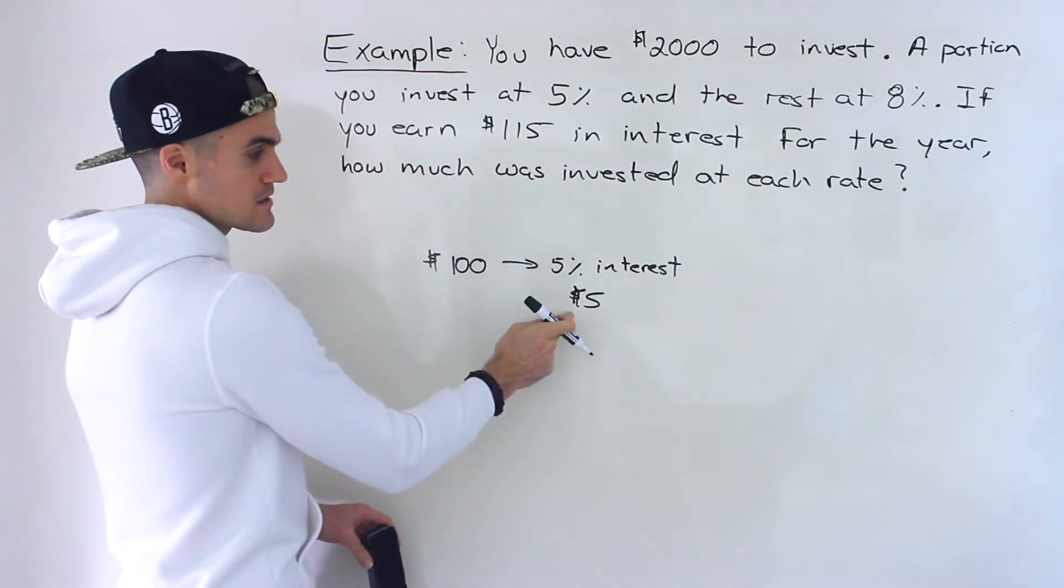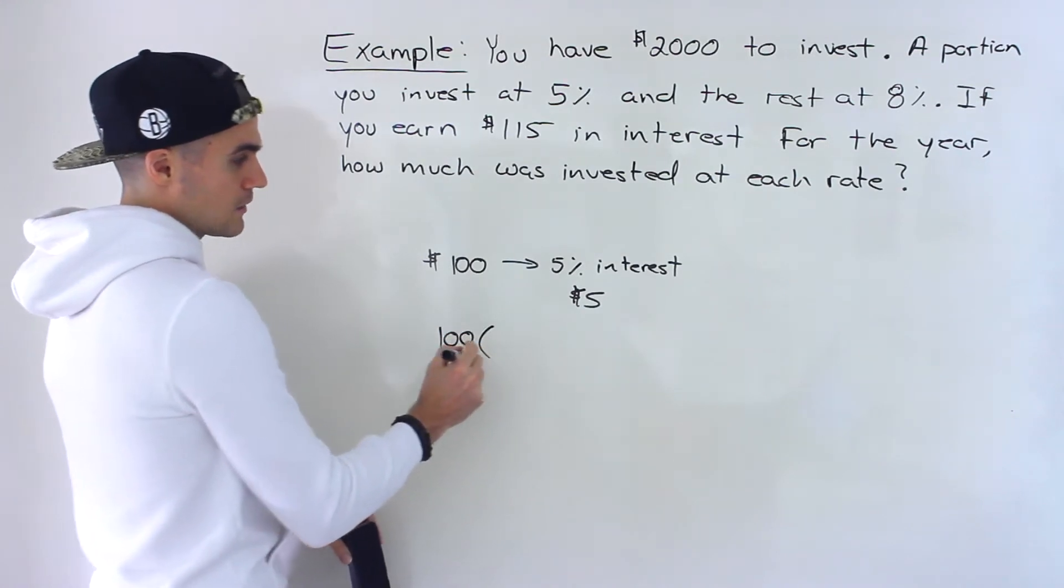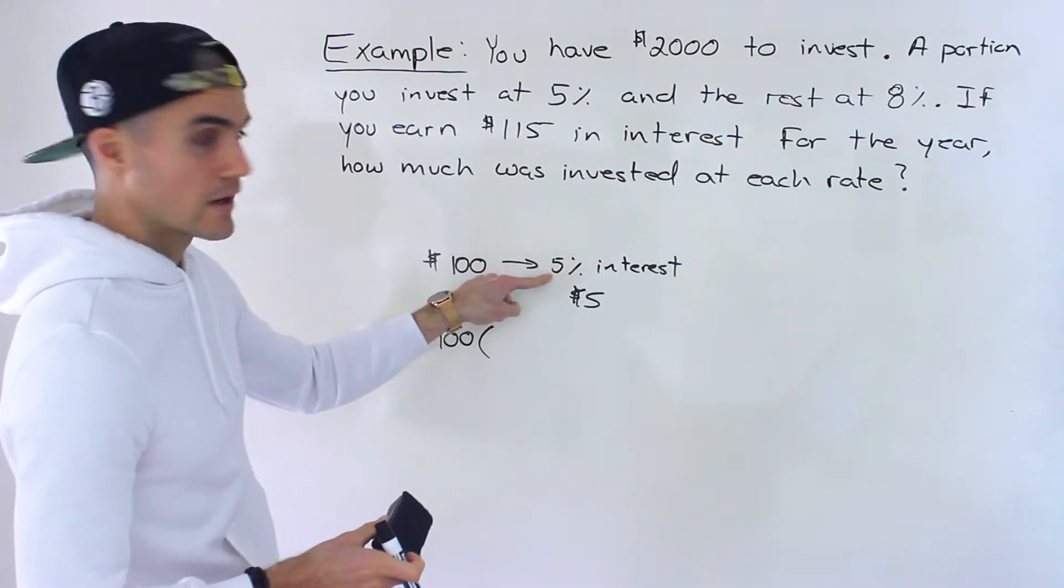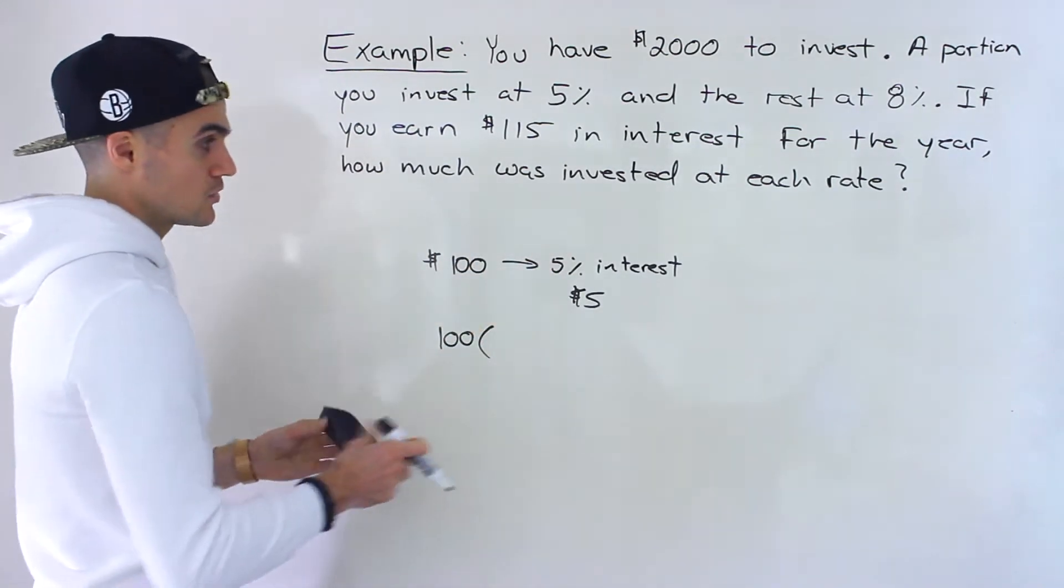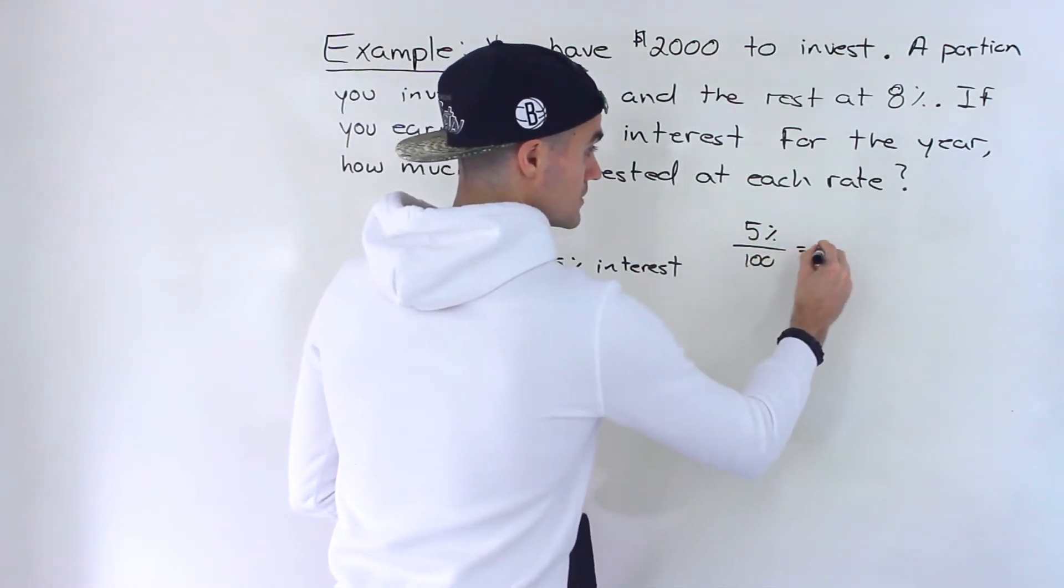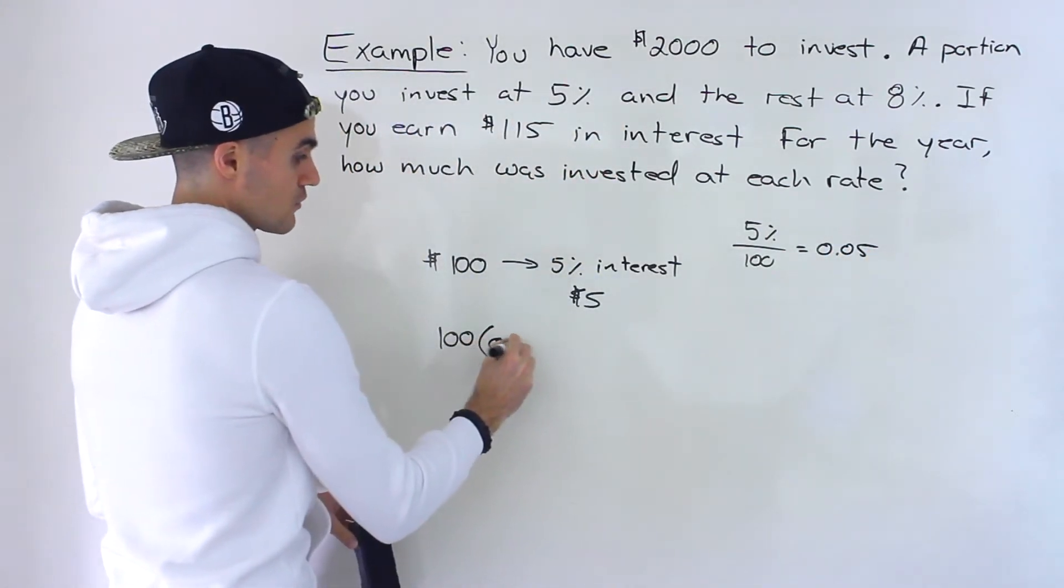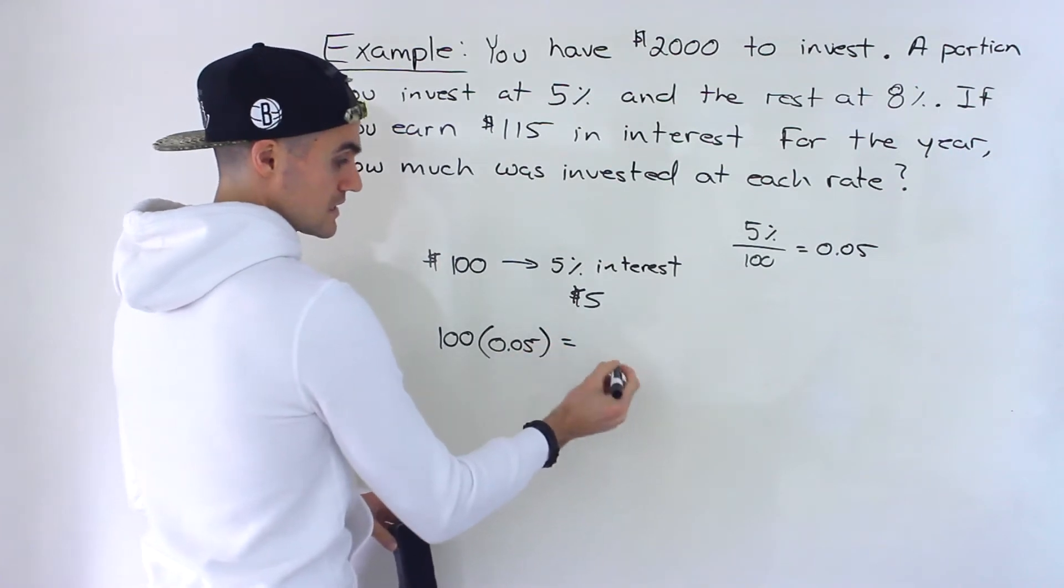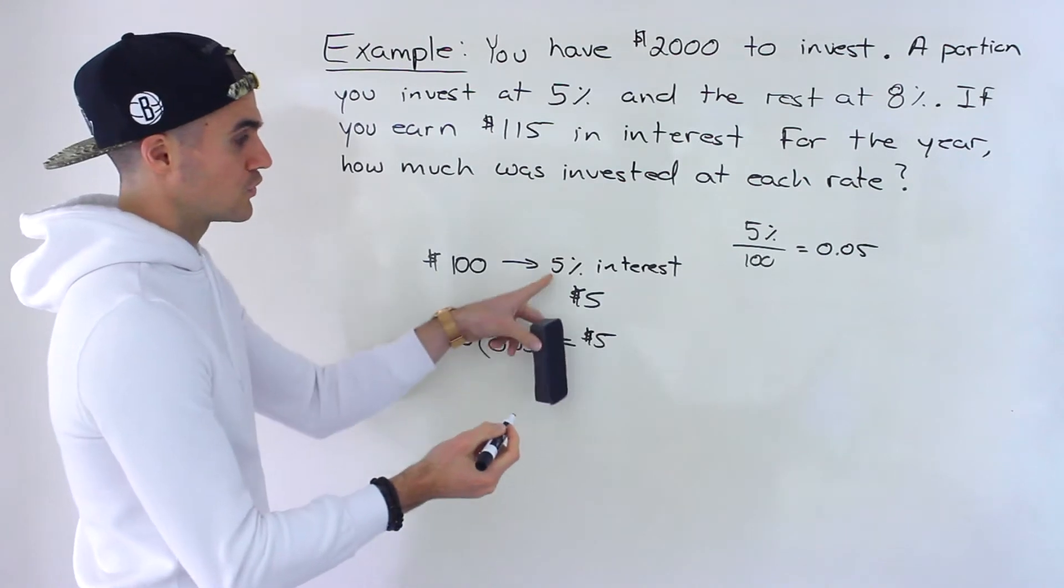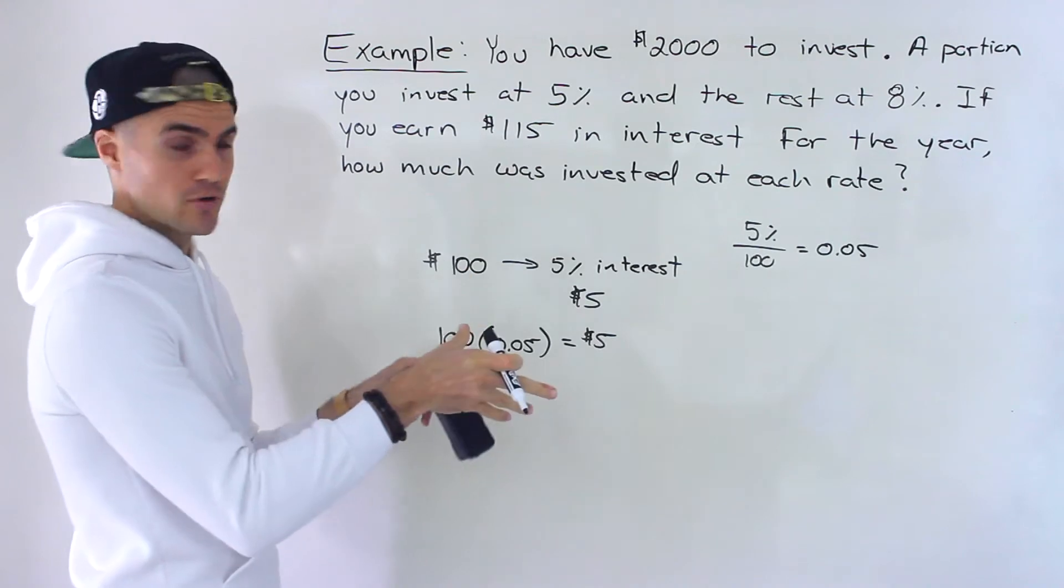Now how do we get to this $5 algebraically? Well, what we do is we take the 100 and then we multiply it by the decimal amount. So 5% as a decimal, we would divide that by 100, so we would end up with 0.05. So 100 times 0.05 is equal to $5. That's how we algebraically do it. We have to convert these percentages to decimals in order to create algebraic expressions.